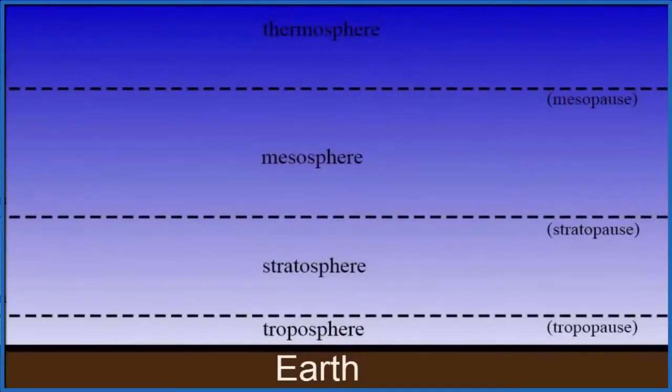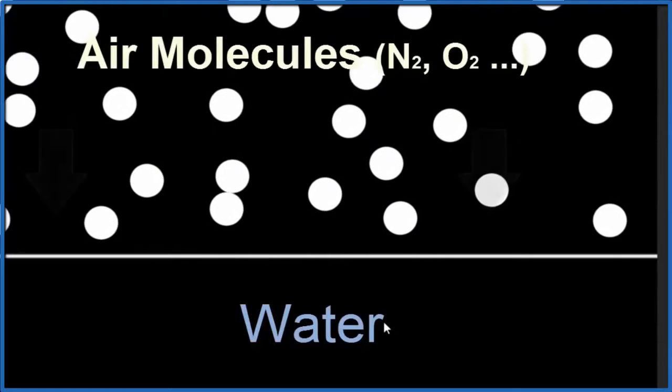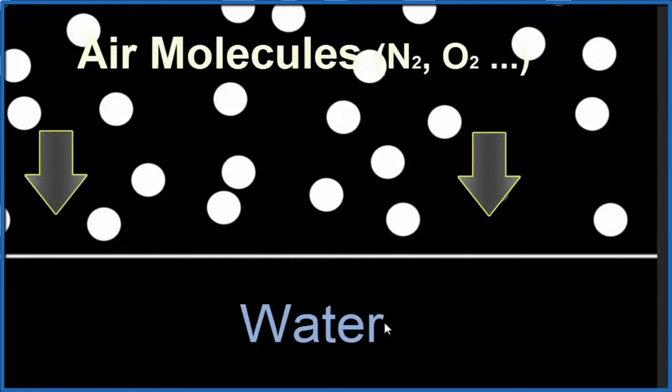We know that boiling is strongly influenced by atmospheric pressure. Pulled down by gravity, the air above us creates pressure, and that makes it difficult for bubbles to form and boiling to take place. We can think of atmospheric pressure as the collisions of air molecules against the surface of the water. That's the pressure.